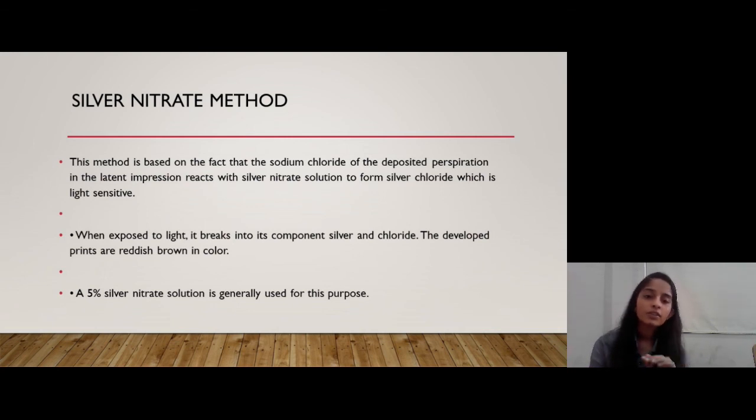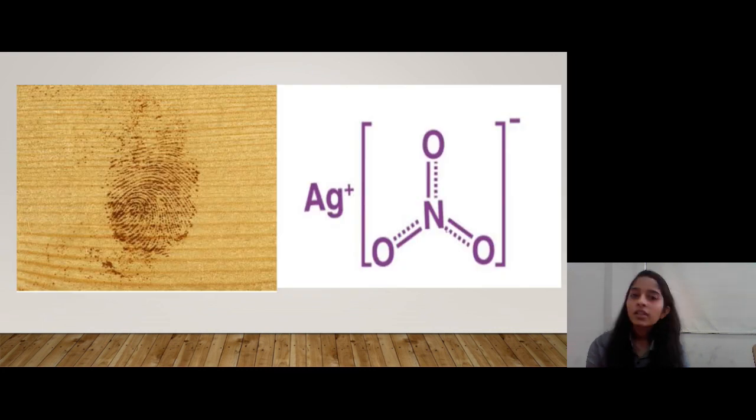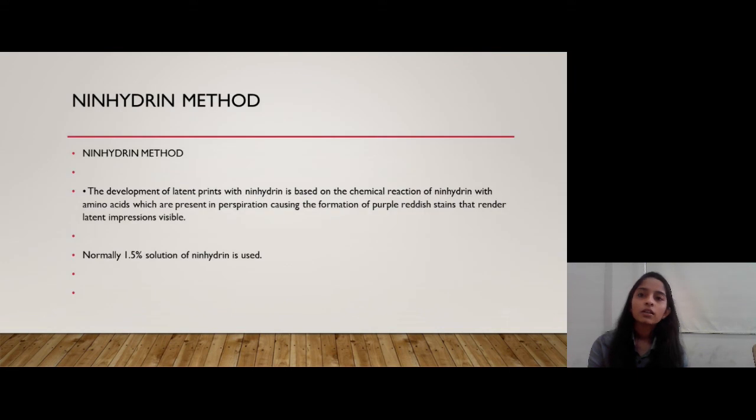We are talking about where silver nitrate is not the light sensitive material. Silver chloride, the reaction it does with our salt, that is NaCl, that makes it a shiny surface and that develops the latent fingerprint. When this developed fingerprint is exposed to light, it breaks into its component, silver and chloride. And the color will get by this fingerprint when we will develop it, it will be reddish brown. For this, we use 5% silver nitrate solution. Usually, it is used and it may differ from situation to situation. For the next one, this is the reaction that is taking place.